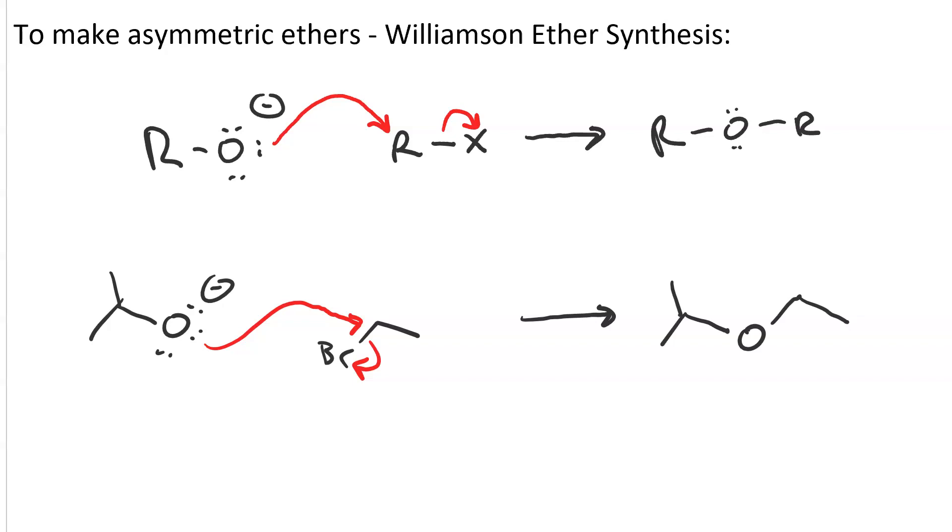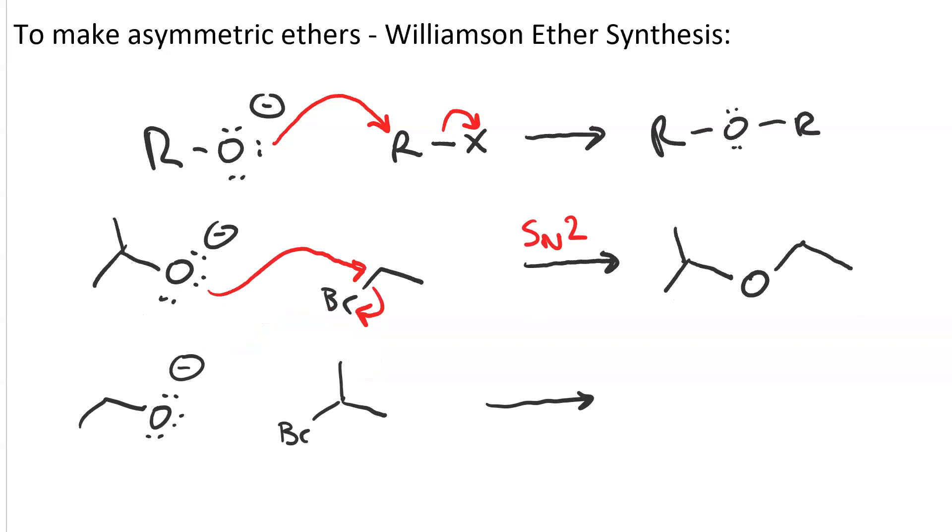What if we used ethoxide and isopropyl bromide? Well, here's the problem. Ethoxide is also a strong base. And when you react a base with a secondary alkyl halide, you get E2. So we're going to take a beta proton. We'll do proton transfer and loss of the leaving group. We would end up with ethanol and propene.